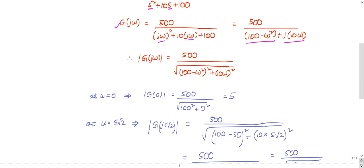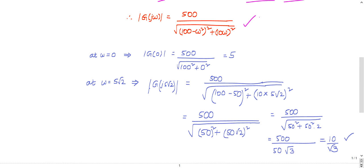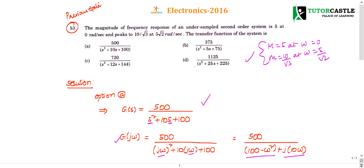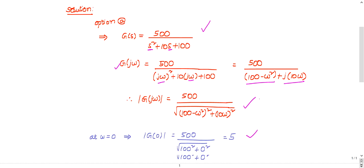Take the magnitude. At omega equal to 0, it is 5. You may substitute omega equal to 0 for all the options - everybody will satisfy and get the magnitude as 5.